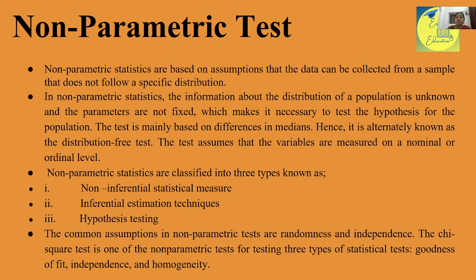Hence, the non-parametric test is alternately known as the distribution free test. The test assumes that the variables are measured on the nominal and ordinal scale — whereas parametric uses interval and ratio. Non-parametric statistics are classified into three types: non-inferential statistical measure, inferential estimation techniques, and hypothesis testing. The common assumptions in non-parametric tests are randomness and independence. The chi-square test is the most important example of this.